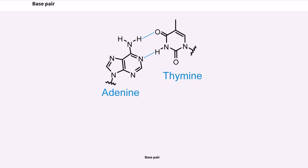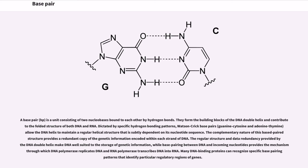Base Pair. A base pair (BP) is a unit consisting of two nucleobases bound to each other by hydrogen bonds. They form the building blocks of the DNA double helix and contribute to the folded structure of both DNA and RNA. Dictated by specific hydrogen bonding patterns, Watson-Crick base pairs—guanine-cytosine and adenine-thymine—allow the DNA helix to maintain a regular helical structure that is subtly dependent on its nucleotide sequence.